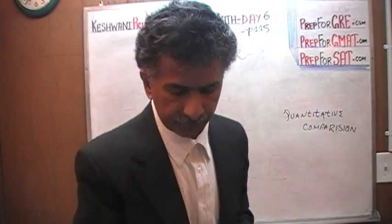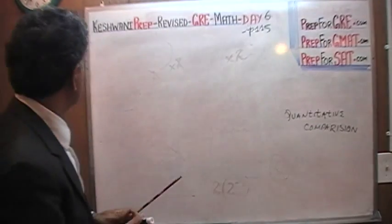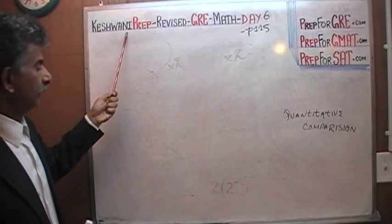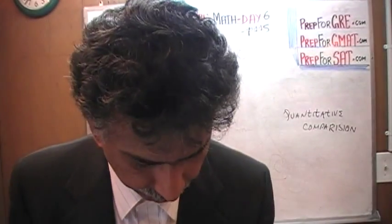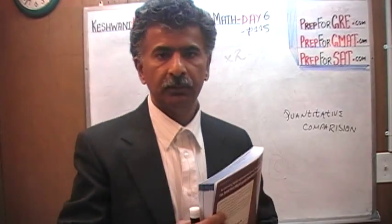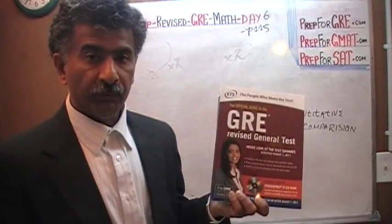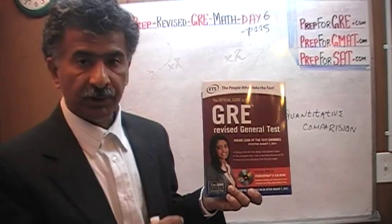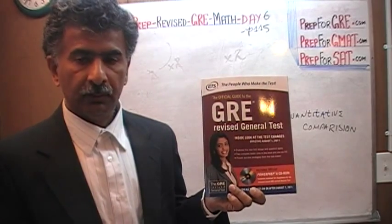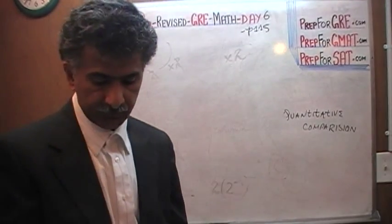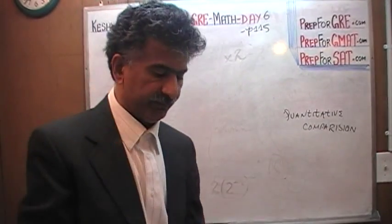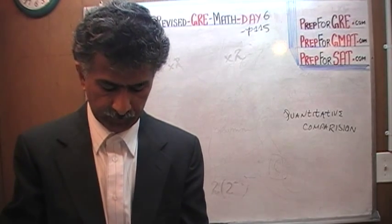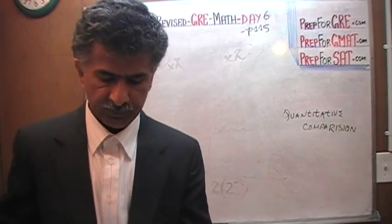Hello, my name is Keshwani — K-E-S-H-W-A-N-I. We are here because we want to prepare for the math portion of the GRE. We have been solving math problems out of this book, the official guide to the GRE revised general test. We are on page number 115. Today is our day number 6 on page 115. Please turn to it. If you do not own this book already, purchase one immediately. You are going to need this book in order for us to work together.